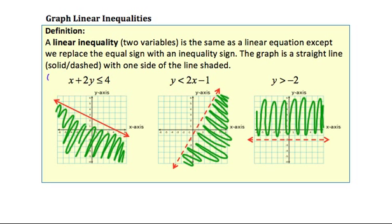We'll start here. I have a linear inequality in our standard form: ax plus by equals some number c, except I've replaced the equal sign with an inequality sign. When we replace an equal sign with an inequality sign, we get a lot more solutions — very similar to one variable. I've graphed my line here, and that line is solid because we have less than or equal to, meaning this line is part of the solution set. All of this green shading to the left of the line indicates those points are also solutions to this inequality.